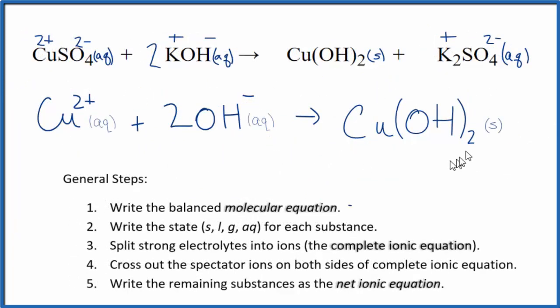So this is the net ionic equation. You'll notice a few things. The atoms, we have the same number and type of atoms on each side, so that's balanced, and the charge is balanced. We have a 2 plus here, then we have 2 times the 1 minus, 2 minus. So this is a neutral compound that charges balance out. And this is the net ionic equation for CuSO4 plus KOH.